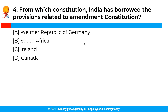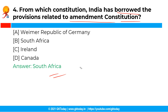The next question is: from which constitution has India borrowed the provisions related to amendment of the constitution? The correct answer is option B, that is South Africa. The Indian Constitution has borrowed two features from the South African constitution: the procedure for amendment of the constitution, and the election of members of the Rajya Sabha.